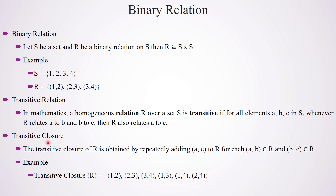Next is transitive closure. The transitive closure of R is obtained by repeatedly adding (a,c) to R for each (a,b) element of R and (b,c) element of R. Here I will explain transitive closure with the help of an example. We are finding the transitive closure of relation R. The three elements (1,2), (2,3), and (3,4) will be in the relation set. There is a transitive relation: 1 is related to 2 and 2 is related to 3, so we can say 1 is related to 3. So (1,3) is added to the transitive closure.